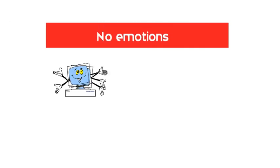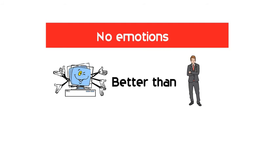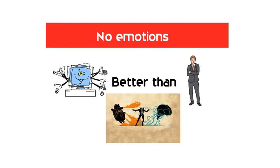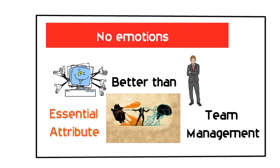4. No Emotions. There is no doubt that machines are much better when it comes to working efficiently. But they cannot replace the human connection that makes the team. Machines cannot develop a bond with humans which is an essential attribute when it comes to team management.